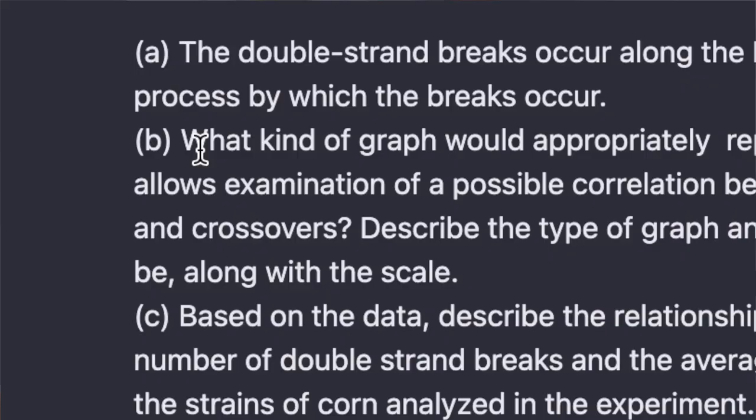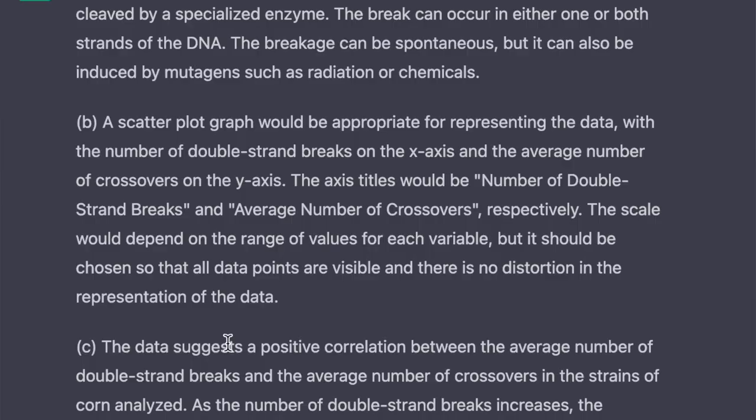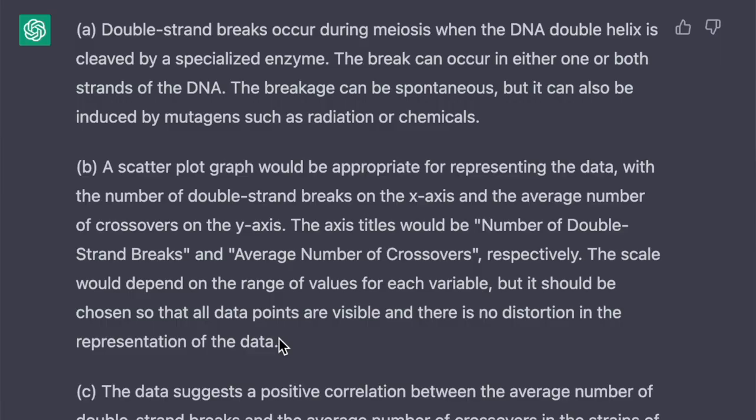Moving on to question two, where it really messed up. Again, not specific enough when talking about the process by which double strand breaks occur in DNA. This I see with a lot of students too — sometimes they know a little bit about the information and they just don't go deep enough. So again, be specific. I asked it to describe how it would create a graph, and I did give it one point for describing a correct graph and creating the correct axis labels. But it just gave some gobbledygook talking about how it would scale it and the values, and didn't talk about error bars or anything else, so it only got one point for the graph.